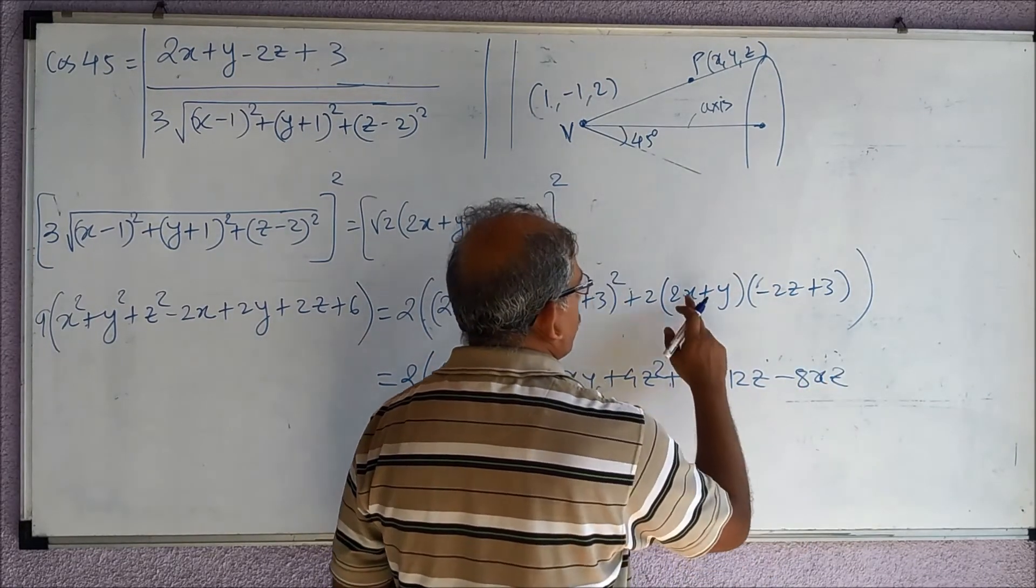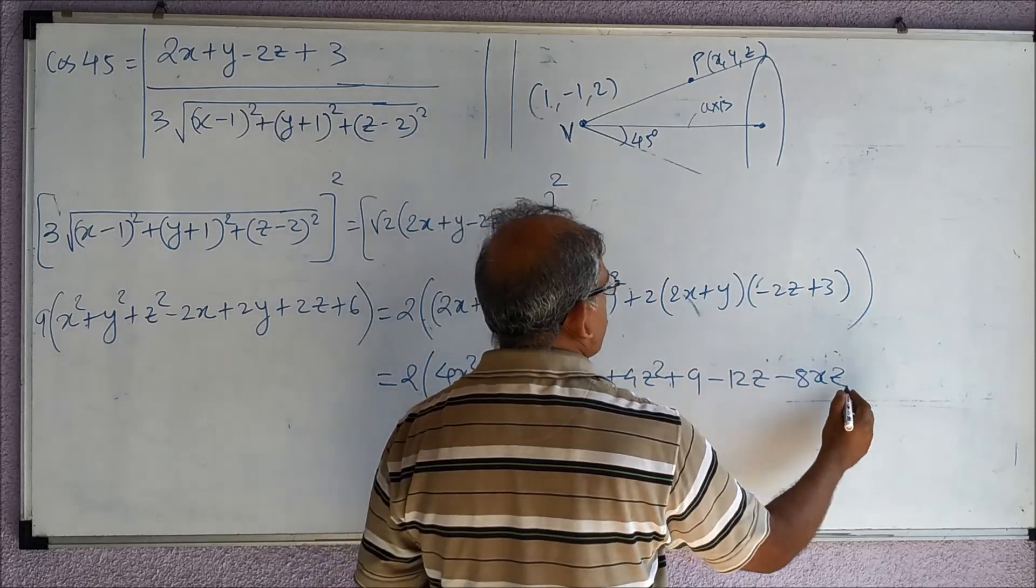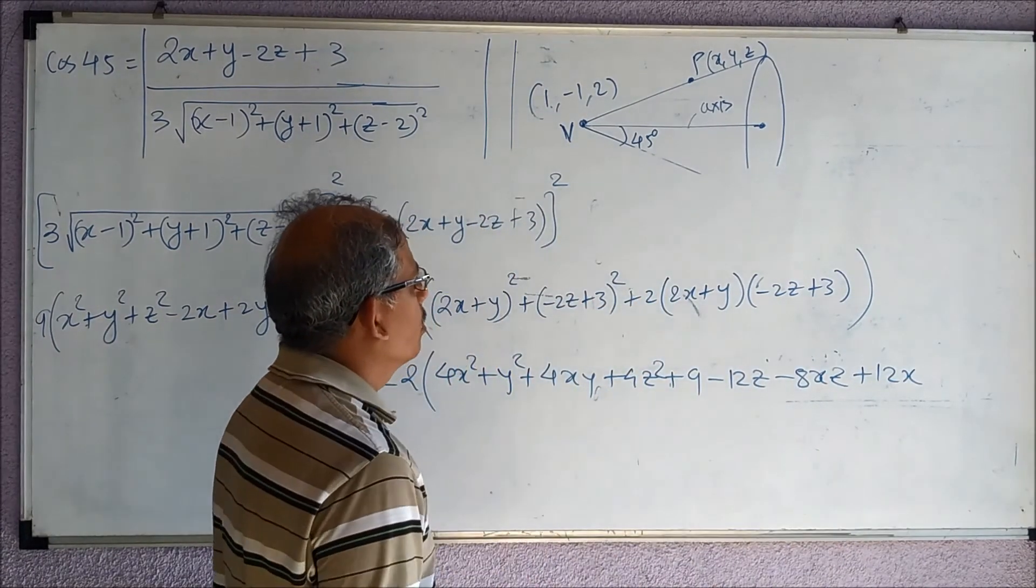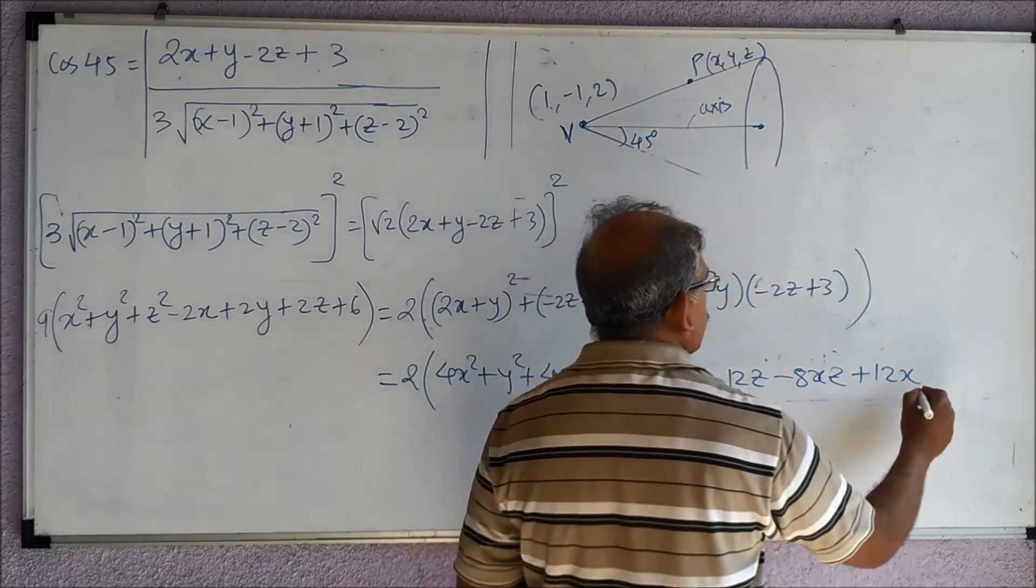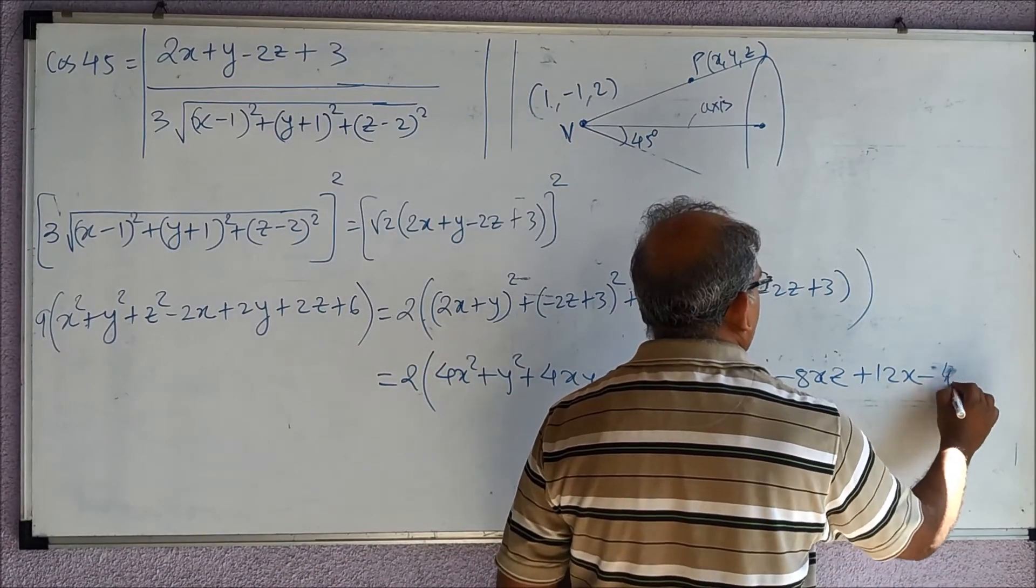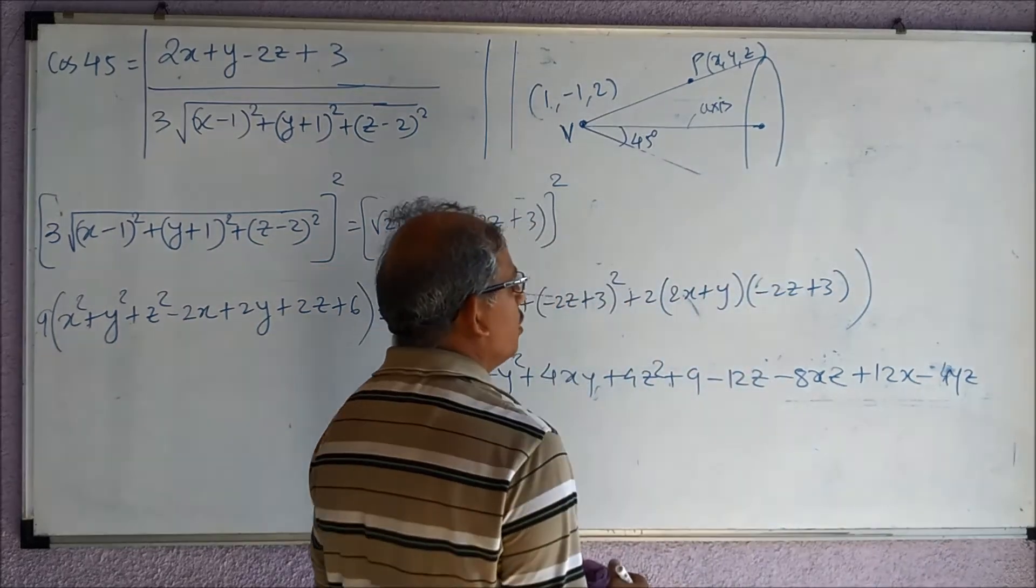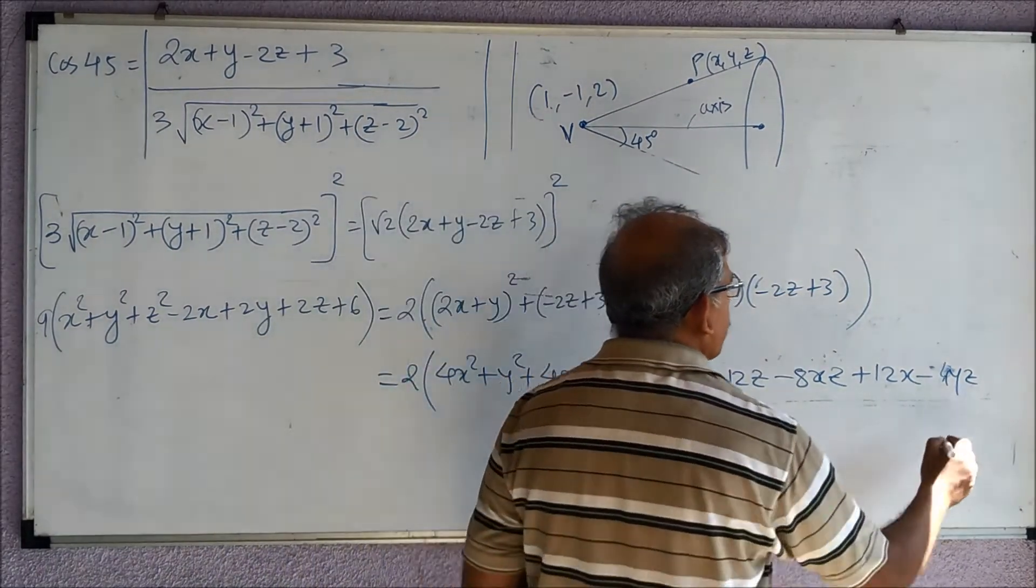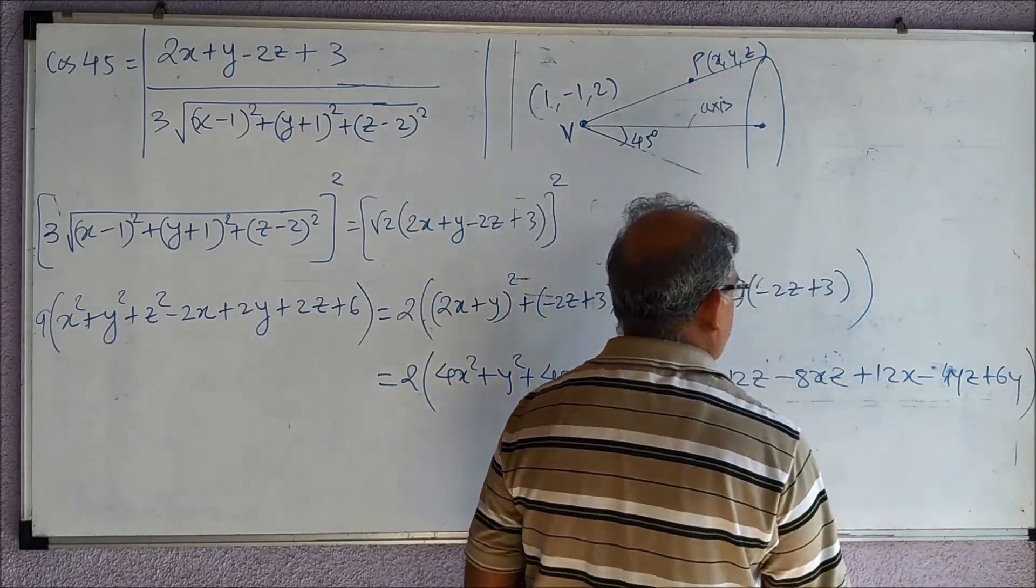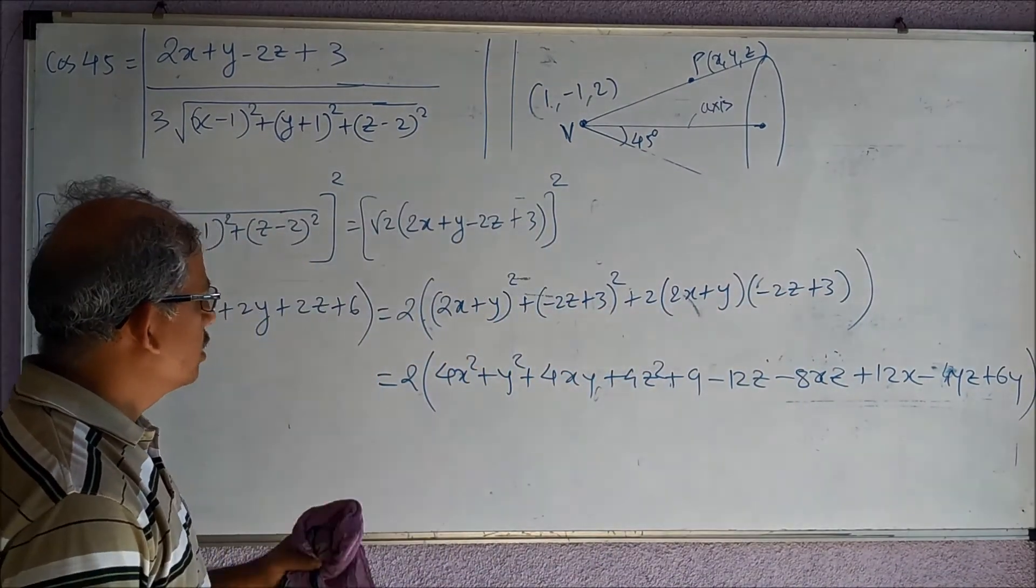So this is 4x, minus 4z, minus 8xz, then 6x, 12x, then minus 2y, so minus 4yz, and then this is 6y. So it is a big expression, but surely we will simplify this immediately now.